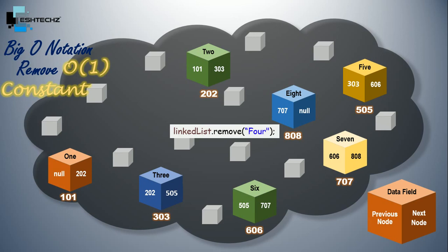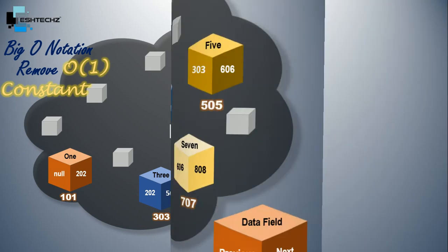And that's why the Big O notation for remove is O(1), which will remain constant in all cases. Now adding a new element will also work in the same way, so Big O notation for adding is also O(1). Now since we have covered lots of things in this tutorial, let's take a look at the summary.